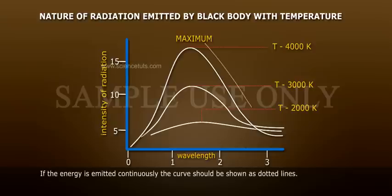If the energy is emitted continuously, the curve should be shown as dotted lines.